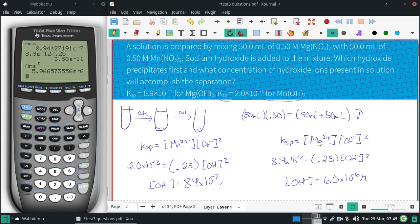So on my answer key, I am going to see magnesium hydroxide is precipitated first. I said magnesium—manganese hydroxide is precipitating first. And the concentration of OH that gets it is somewhere between these two.